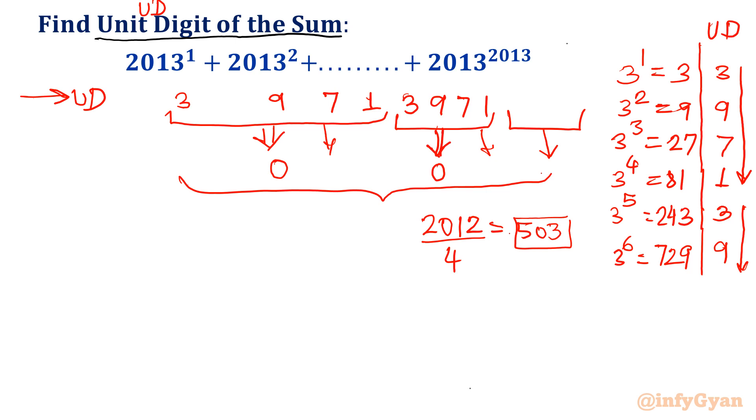So that number will begin with 3 itself. 0 unit digit for first 4 numbers, 0 another 4 numbers, 0 next 4 numbers, up to the term which is 2012 position, 0. 2013 position you will have unit digit 3, because it is starting from 3. All right, so your answer will become 3.